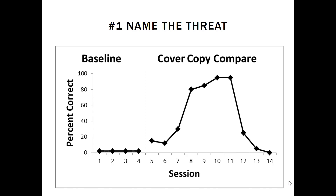Graph number one — name that threat. What we see here potentially is the inhibitive effect of testing. At session 12, right after session 11, data decrease and then steadily increase. What might cause this drop? Could it be the inhibitive effect of testing? That might be a likely threat for graph number one.